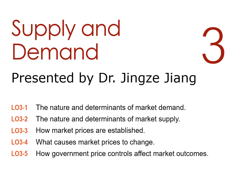This introduction sets the general direction of this chapter, which is to look at how the market system answers the following questions: What determines the price of goods and services? How does the price of a product affect its production and consumption? And why do prices and production levels often change? Those are the three core issues we try to answer.